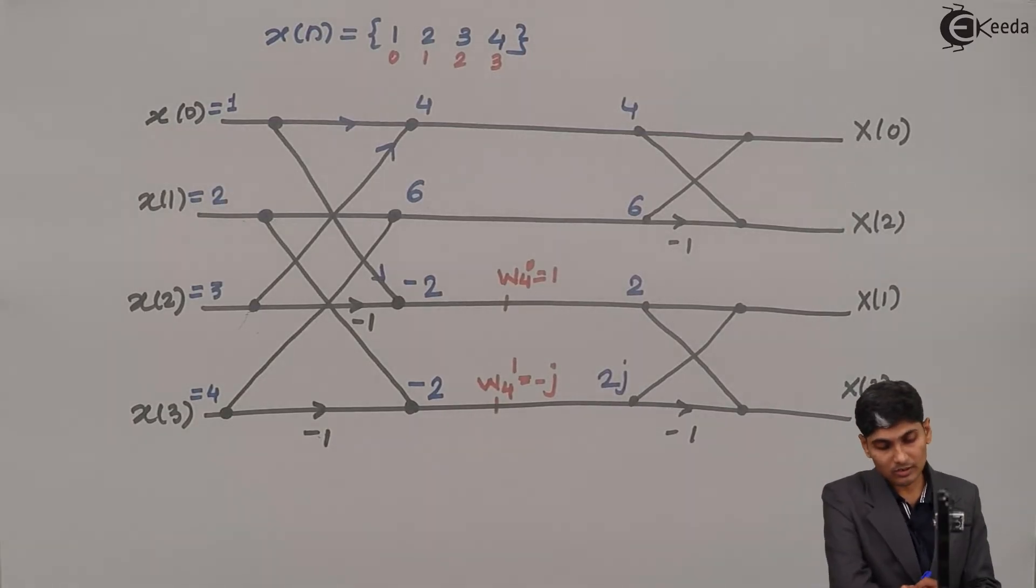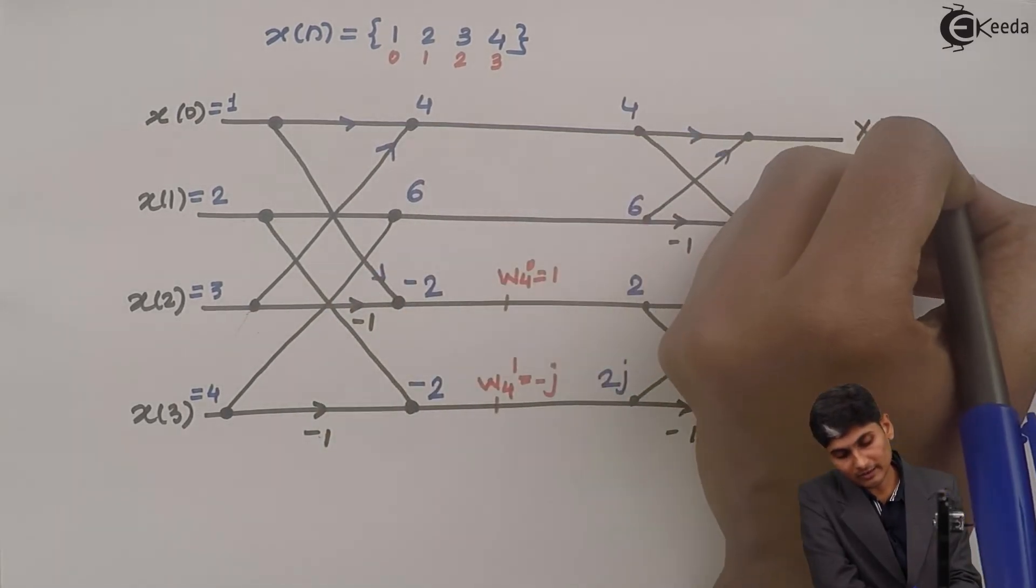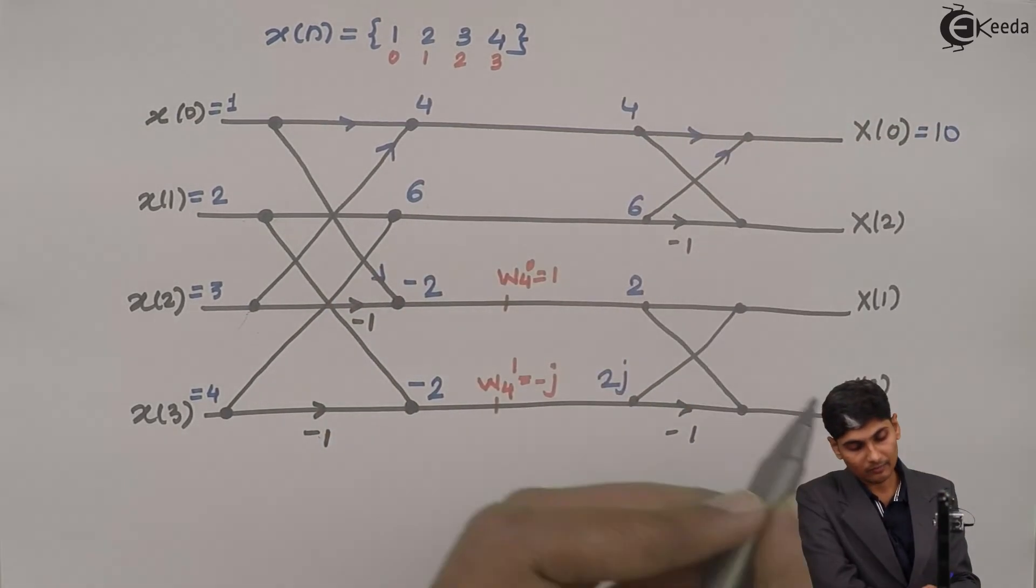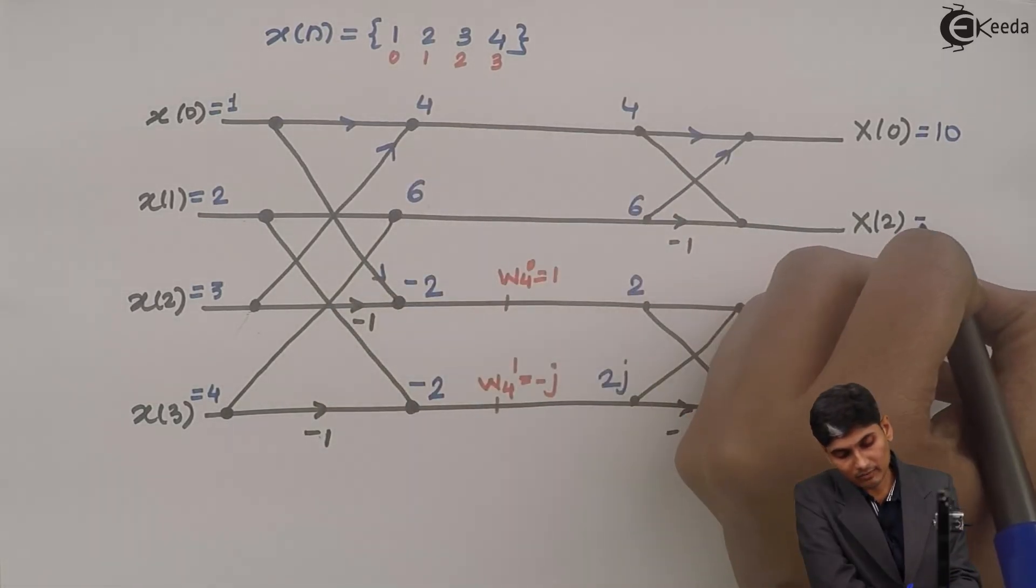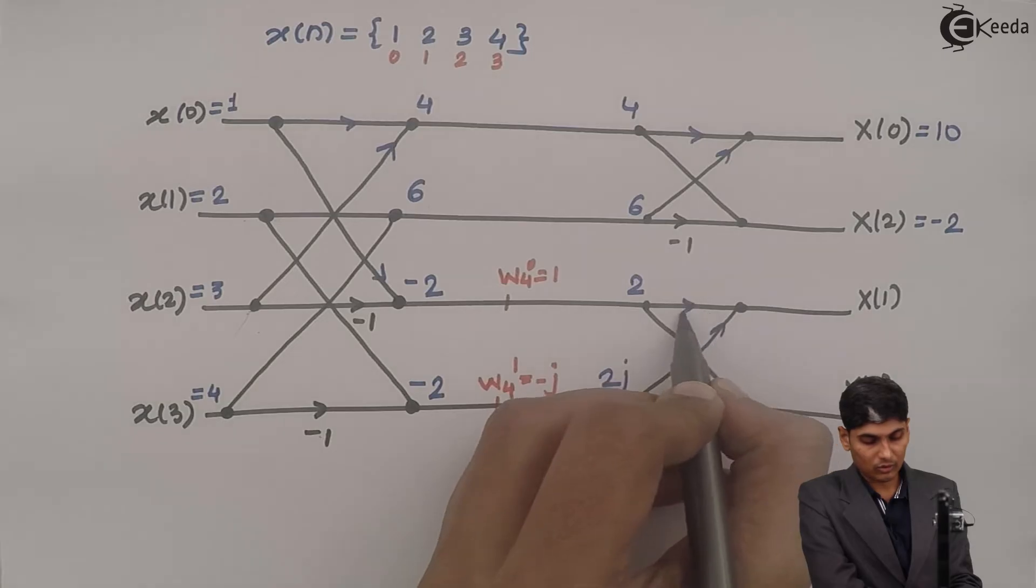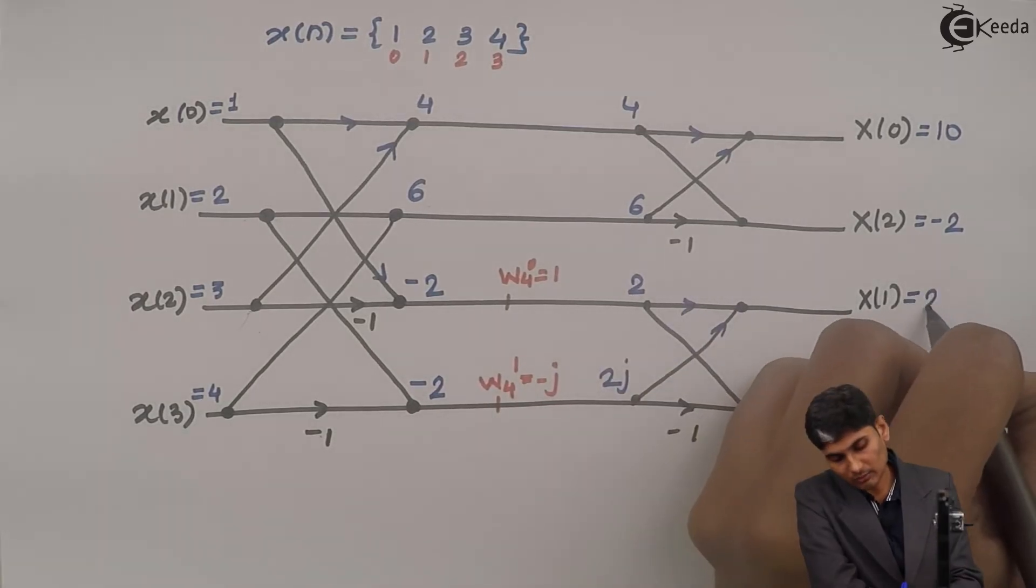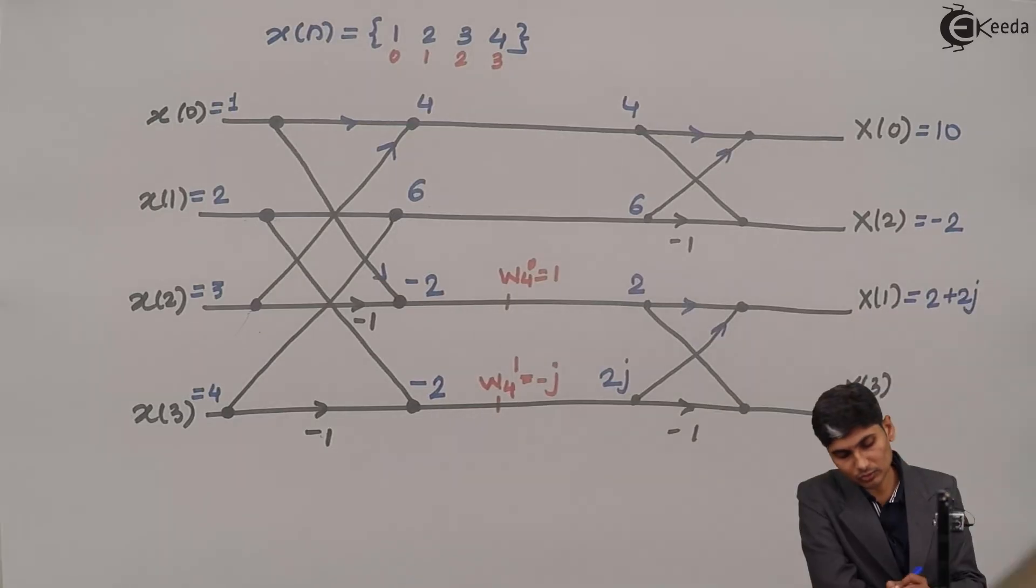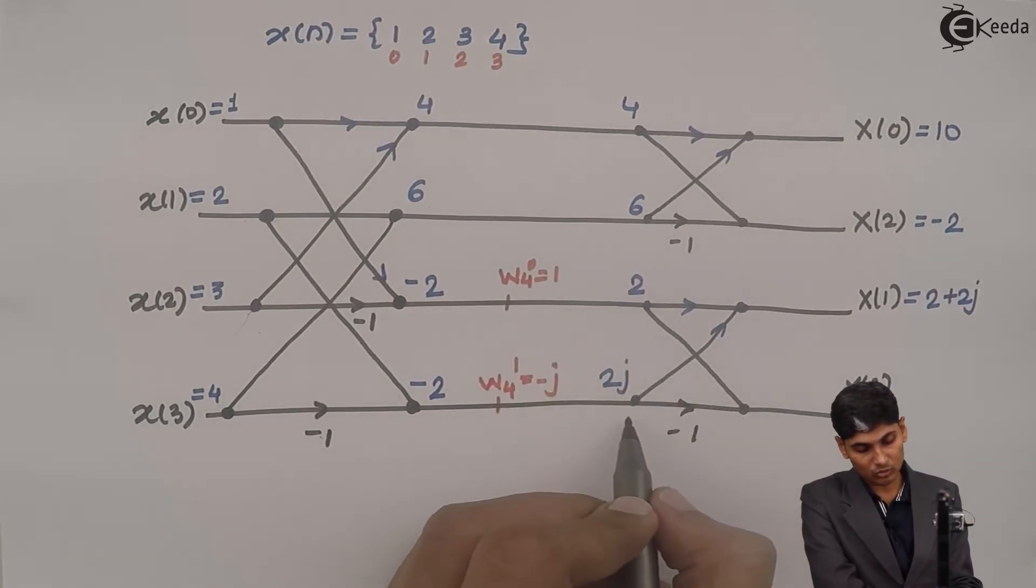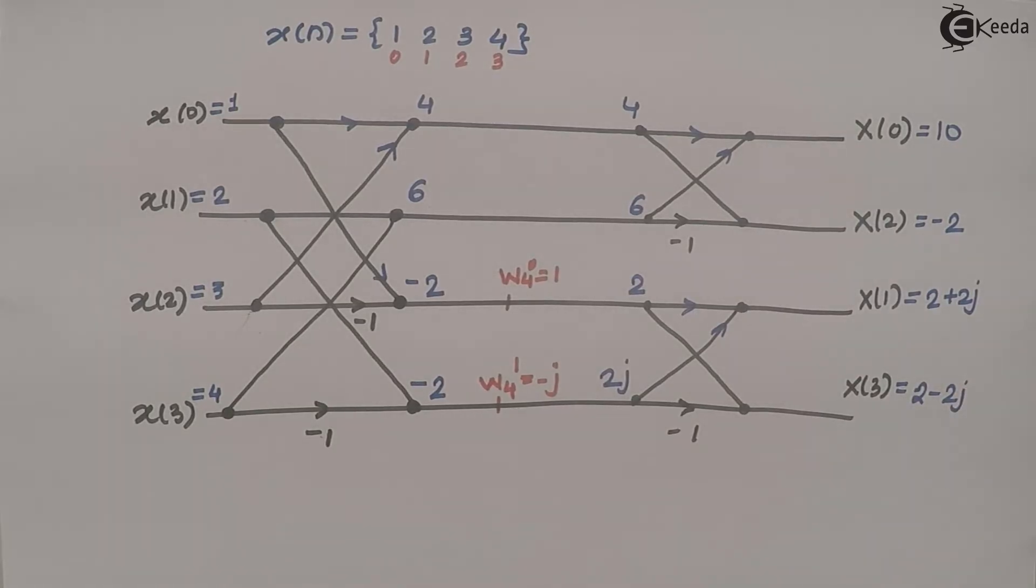Now here when I go up, I am going to add 4 plus 6, the value is 10. 4 minus 6, the value is minus 2. Here the value is 2 plus 2j, and here it is 2 minus 2j.